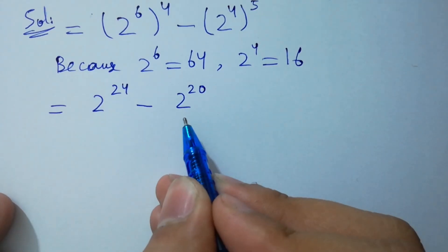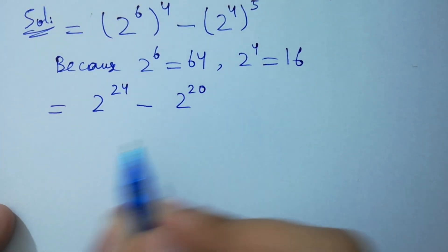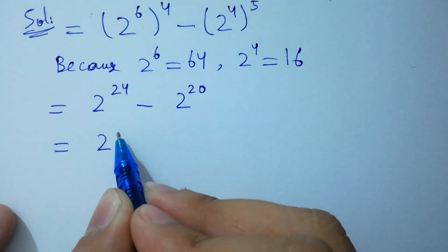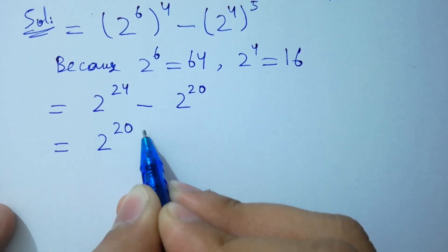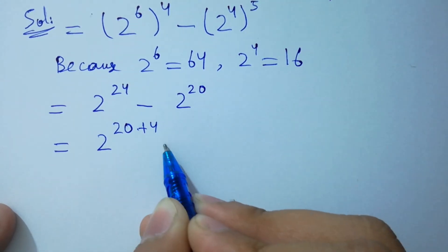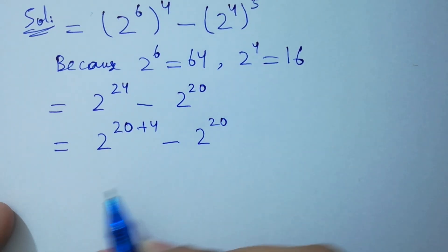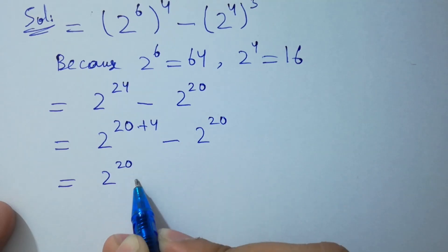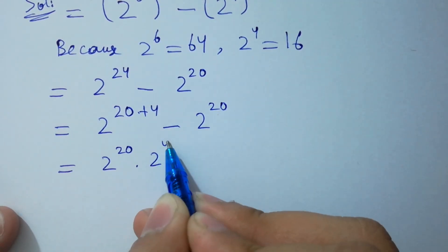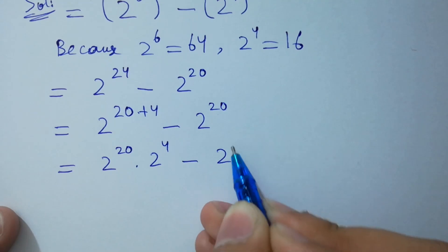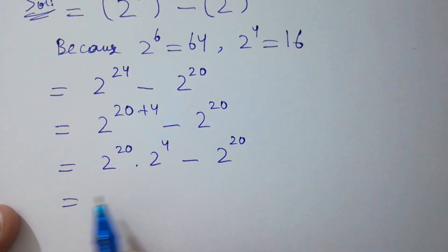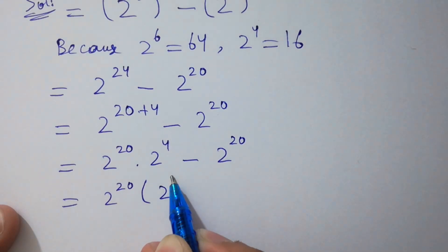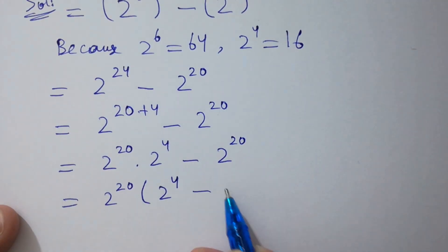In the next step, to take out the common factor 2 to the power 20, it can be written as 2 to the power 24 minus 2 to the power 20. Factoring out 2 to the power 20, we have 2 to the power 4 minus 1.